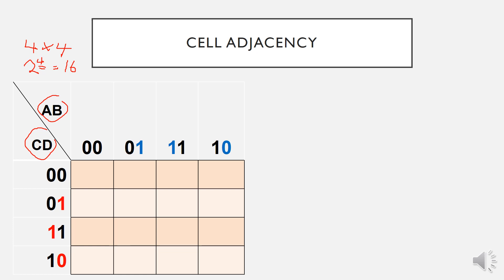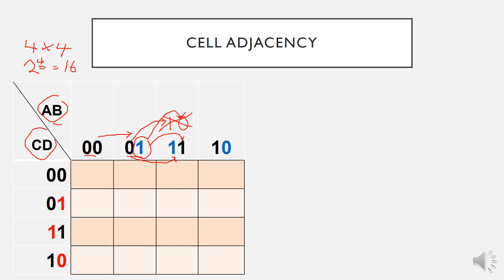The first cell starts with AB taking the value 0, 0, and the next cell can only change one variable. So from 0, 0 to 0, 1, only one bit is changed. The next cannot be 1, 0 because going from 0, 1 to 1, 0 would change two variables, which violates the K-Map rule that only one variable may change between adjacent cells. So we must take 1, 1 — only one variable differs from 0, 1. Then from 1, 1, only one variable changes to give 1, 0.